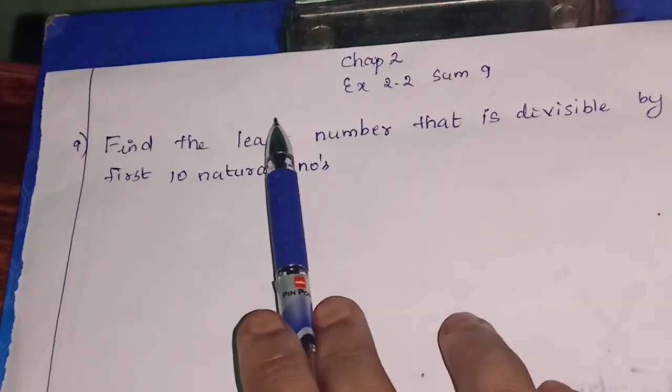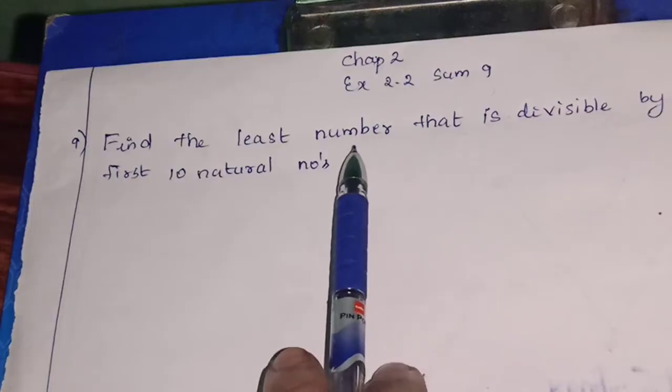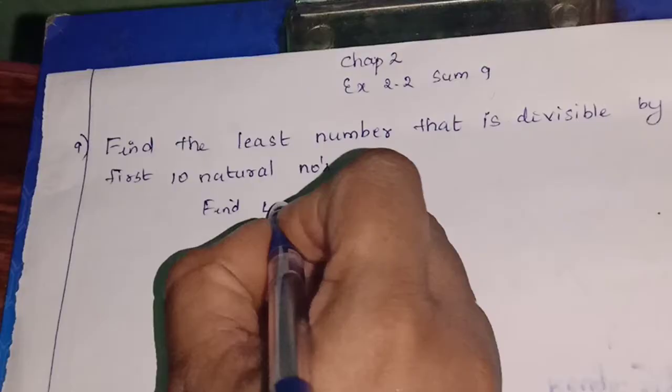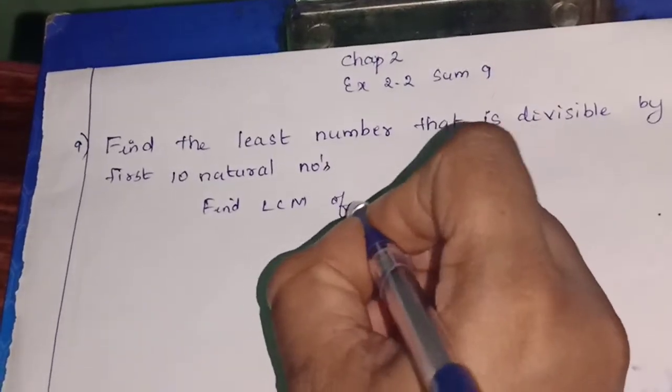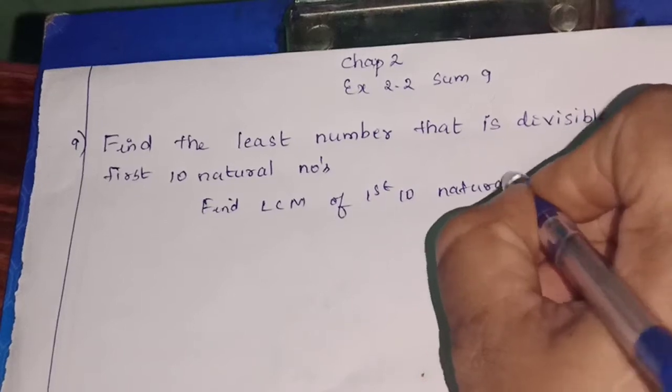Least common multiple that is divisible by first 10 natural numbers. You can remember the least common multiple. So LCM of first 10 natural numbers is asked. First 10 natural numbers.